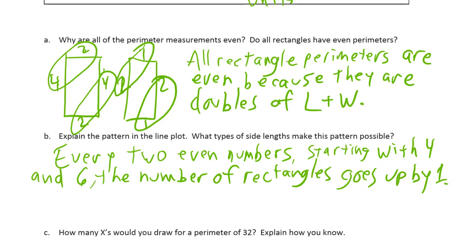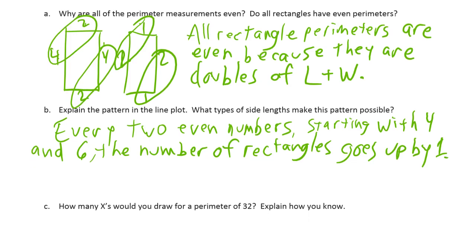This question — what types of side lengths make this pattern possible — is a fun math puzzle. It gets you to think: you've discovered a rule, but what could break that rule? It doesn't matter if the side lengths are even or odd; you still get even perimeters. So what if I have a rectangle that's 1 by 3? The length plus width would be 4, you double 4, and you get 8 — an even number. That's one of the rectangles for a perimeter of 8.